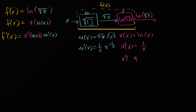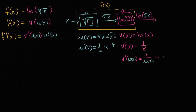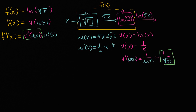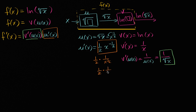v'(u(x)): wherever we see the x in v'(x), we replace it with u(x). So v'(u(x)) = 1/u(x) = 1/√x. And u'(x), we figured out, is (1/2)x^(−1/2). I can rewrite that as (1/2) · (1/x^(1/2)) = (1/2) · (1/√x), or equivalently 1/(2√x).